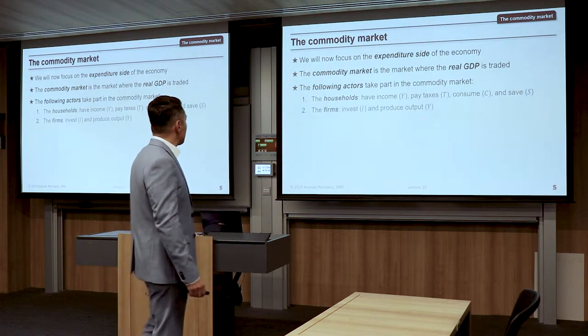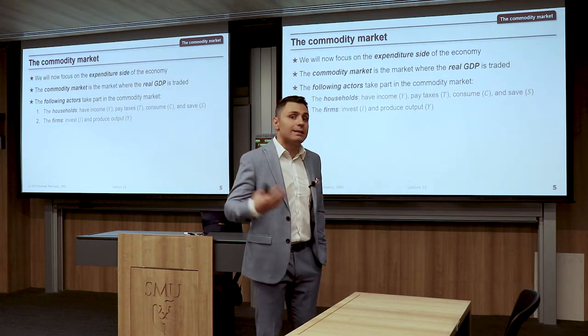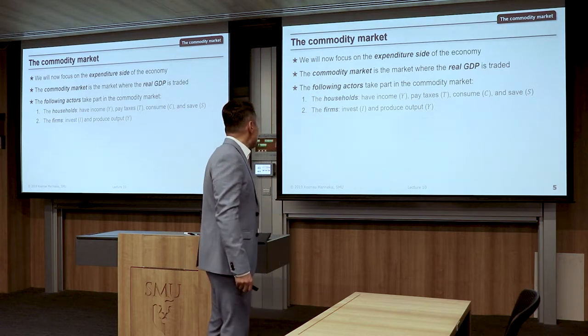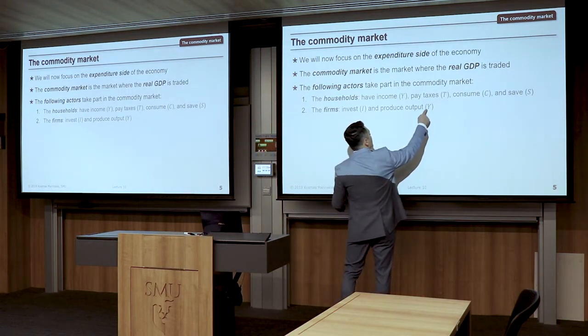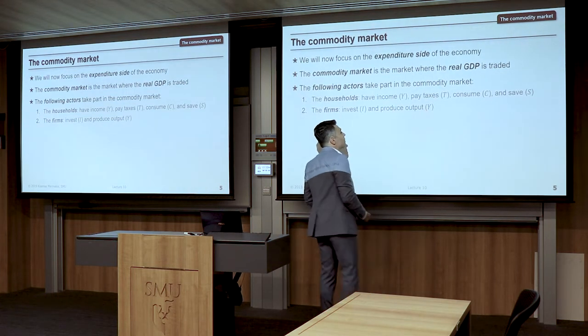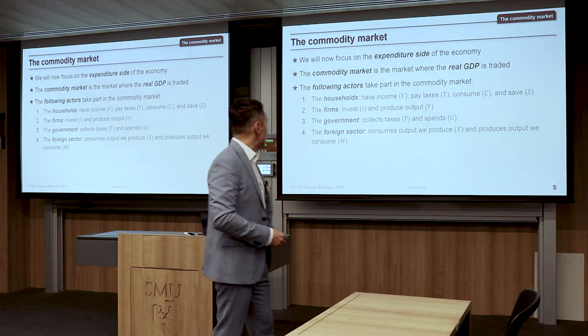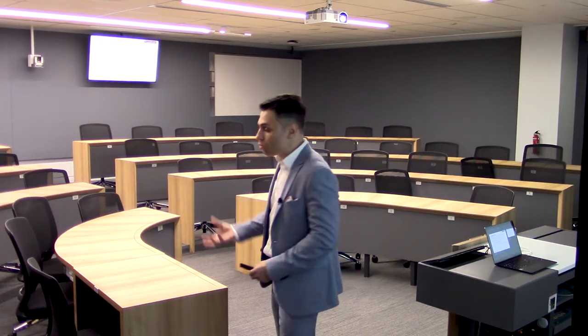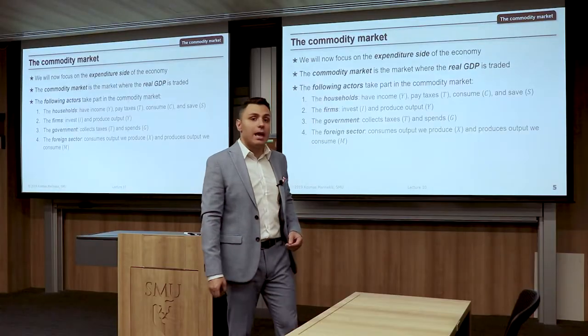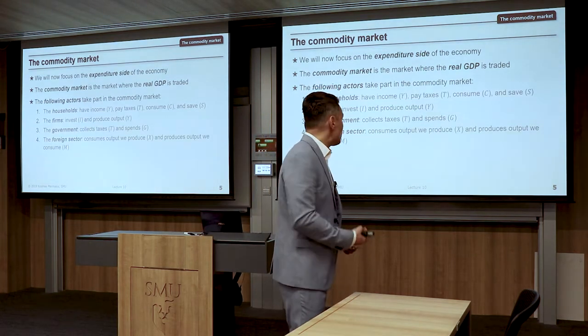The second actor is firms. Firms invest — and don't forget that investment comes from saving most of the time — and then they produce output, which circulates back. The third participant is the government, which collects taxes and spends money through government spending G. The fourth participant is the foreign sector, which consumes output we produce through exports and produces output we consume through imports, appearing in our model as X and M from the expenditure identity.